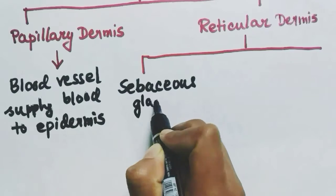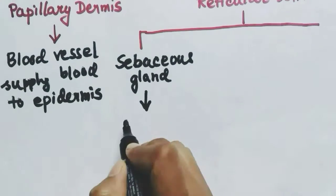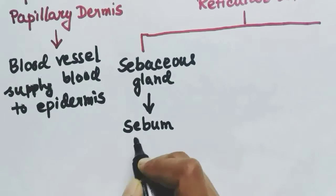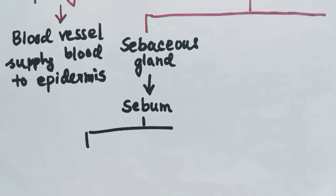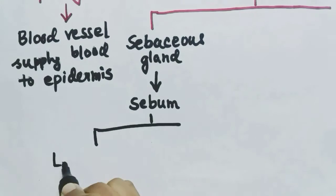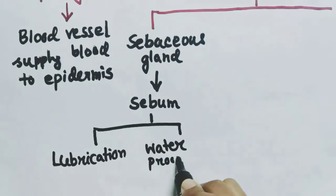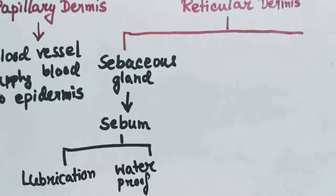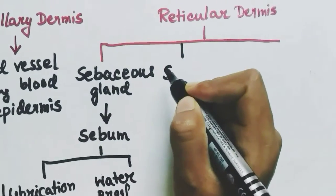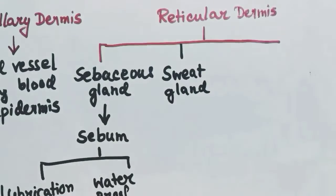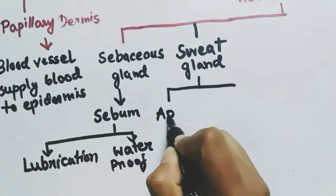The sebaceous gland releases sebum, which performs two functions: first, it lubricates our skin, and second, it helps in waterproofing our skin. The next component is the sweat gland, which is of two types: apocrine and eccrine.